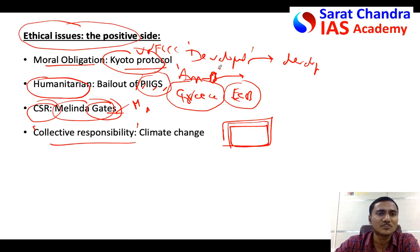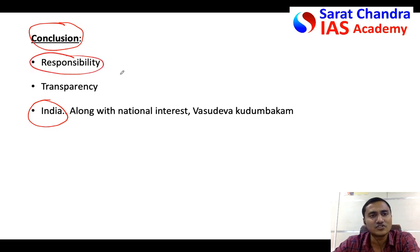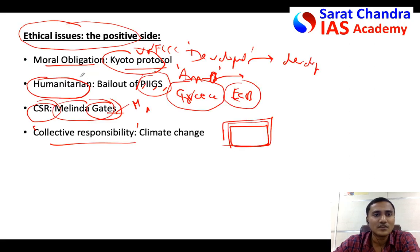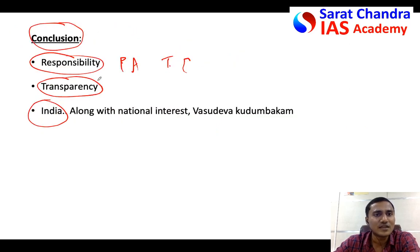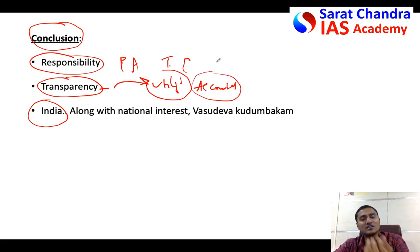Now, how do you conclude this kind of question? As I always tell you, try to bring in India in any international question. You can say it is the responsibility of every nation to fund underdeveloped countries, because poverty anywhere is a threat everywhere. However, we have to suggest solutions to stop the negative side of international funding. Transparency is very important - one should know where funds are exactly going and how they are utilized. There should be an international body monitoring the funding and making everyone accountable.